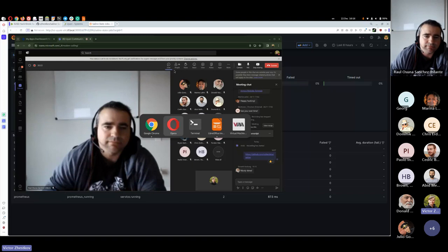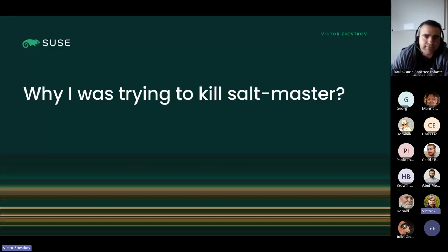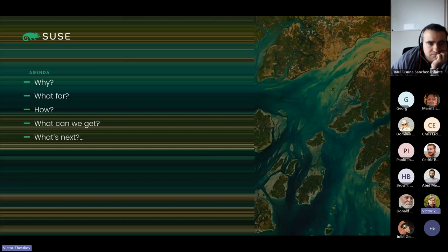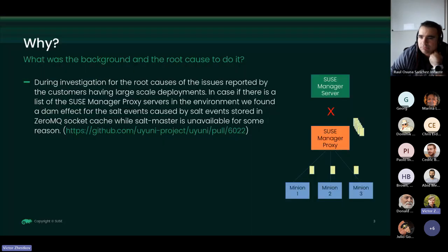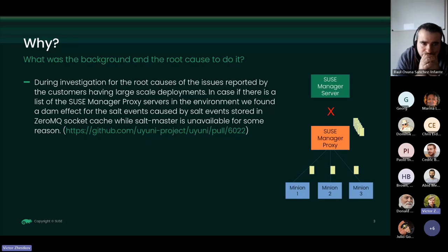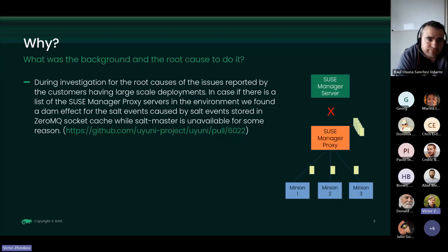Moving to the second presentation, which is more complex. Victor shows the agenda as a list of questions - only for some does he have proper answers, and for others he is still working on identifying how to avoid the situation. The background: more than a year ago, a customer reported a strange situation where one of the Salt master's sub-processes was consuming too much memory and CPU, and in most cases was killed by the out-of-memory killer.